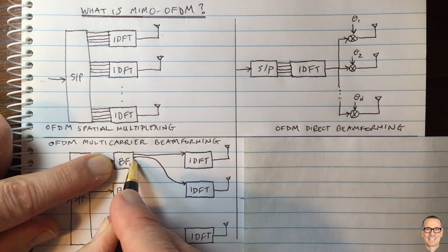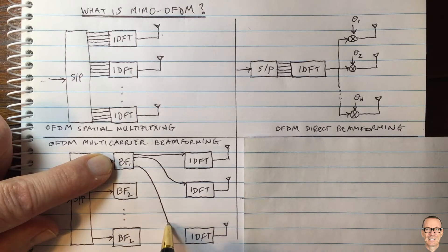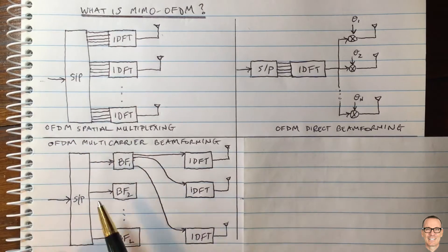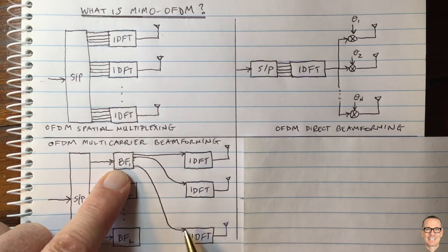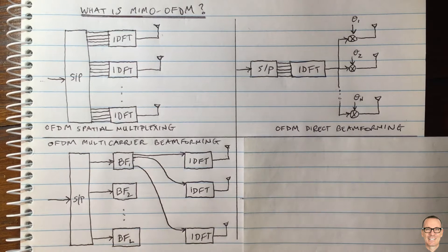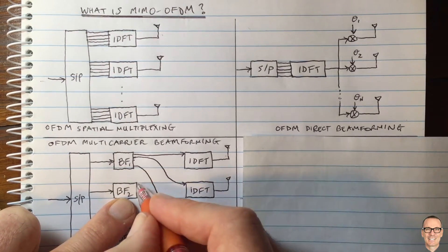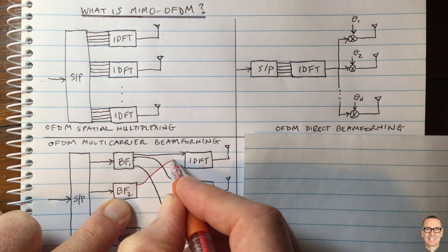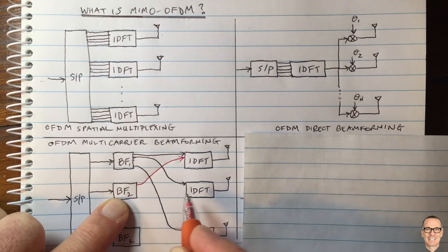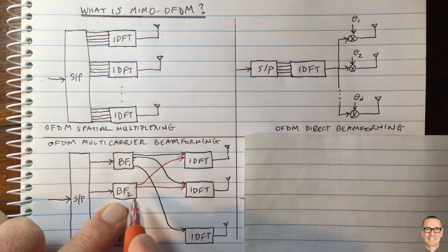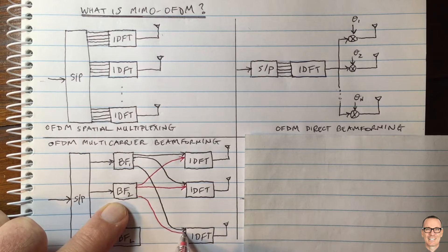Everything coming out of this beamformer goes into the first subcarrier of OFDM, so the third beamforming output goes into the third antenna and the last output to the last antenna — all on the first subcarrier. For the second beamformer, the first output goes to the first antenna on subcarrier number two, the second output to the second antenna, and similarly all outputs from this beamformer go into subcarrier number two.